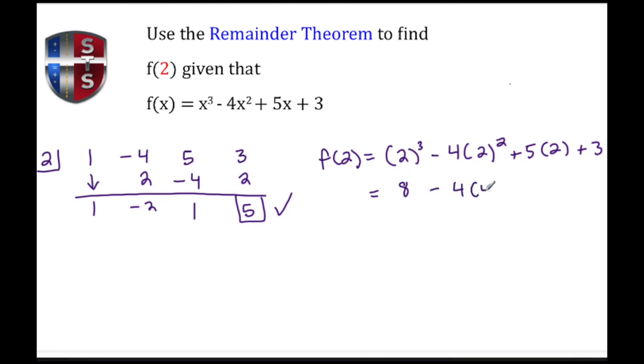My next step: I rewrite. 4 times 4 gives me 16, I've got my plus 10 and my plus 3. So I have 8 minus 16 plus 10 plus 3.